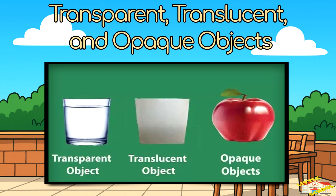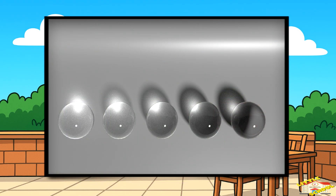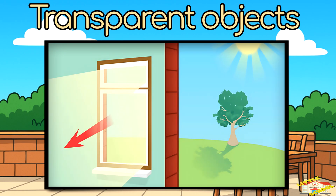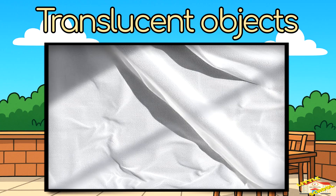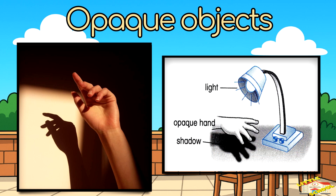Transparent, translucent, and opaque objects. Not everything makes a shadow the same way. Transparent objects, like glass, let all the light pass through, so they make no shadow. Translucent objects, like thin cloth, let some light through, so they make a faint shadow. Opaque objects, like your hand, block all the light, so they make a dark shadow.